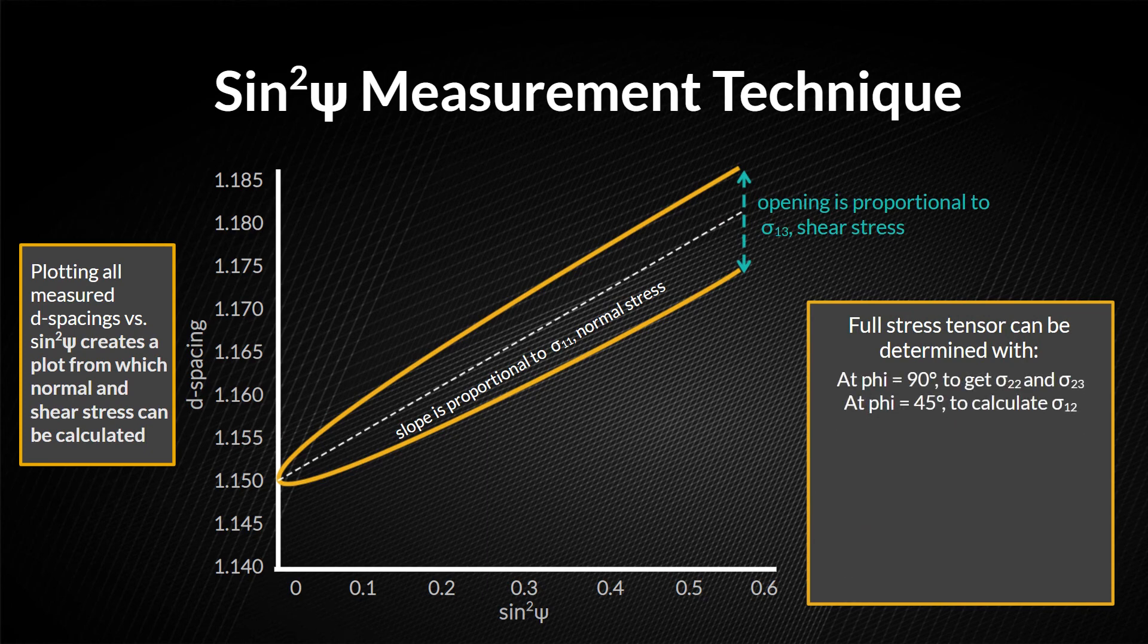First, we can measure this sample at 90 degrees relative to the original measurement to get the normal stress sigma22 and the shear stress sigma23.